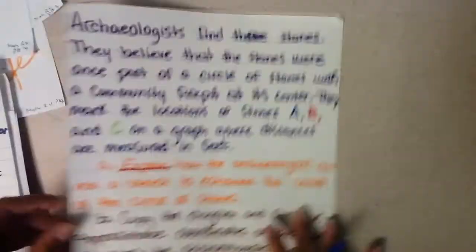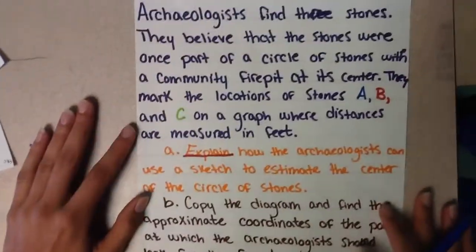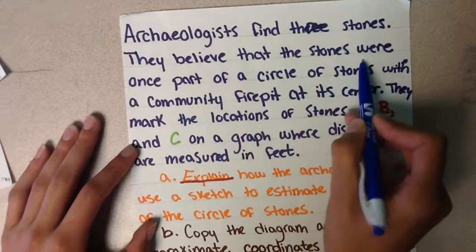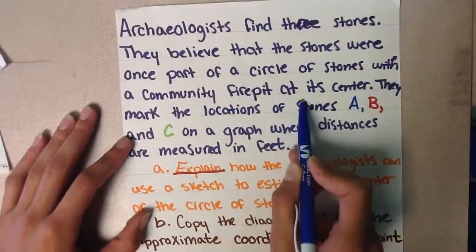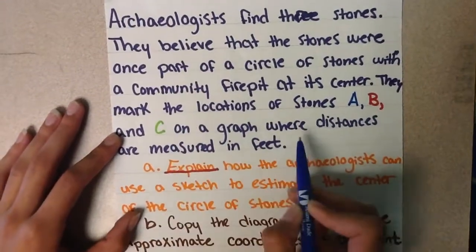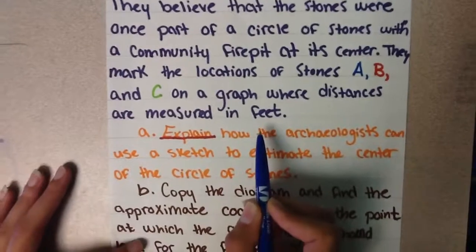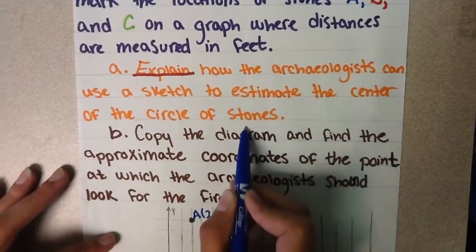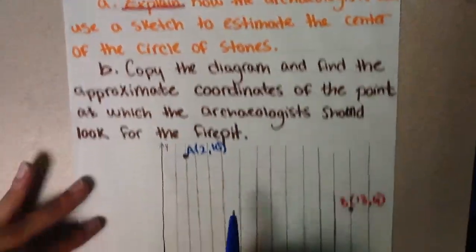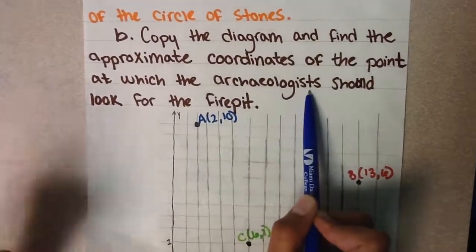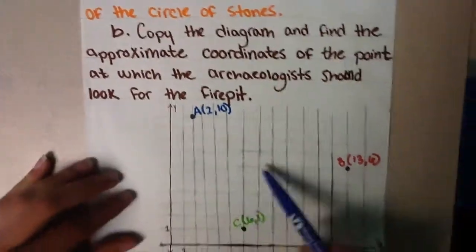The third theorem is going to be stated when we're doing this problem. Question 28 states that archaeologists find three stones. They believe that the stones were once part of a circle of stones with a community fire pit at its center. They mark the locations of stones A, B, and C on a graph where distances are measured in feet. It's going to be in the middle.